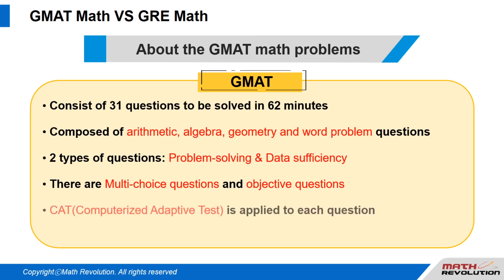On the GMAT, the CAT — computerized adaptive test — is applied to each question, while on the GRE, the CAT is applied to each section.